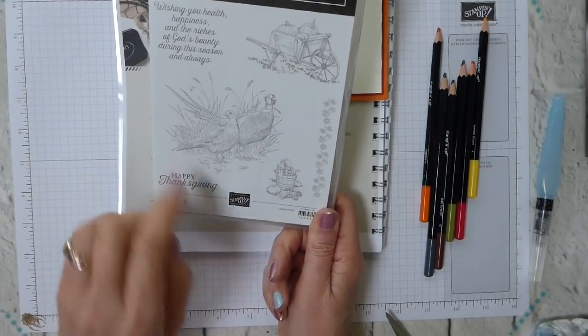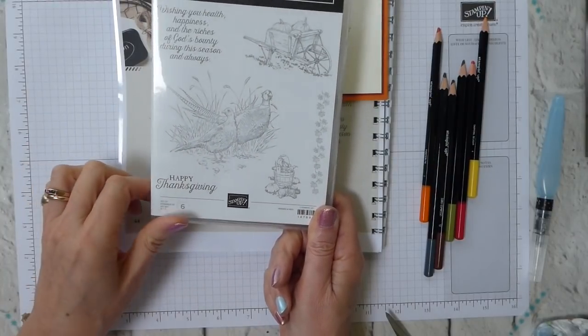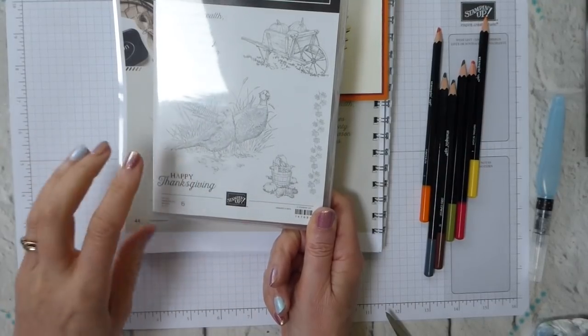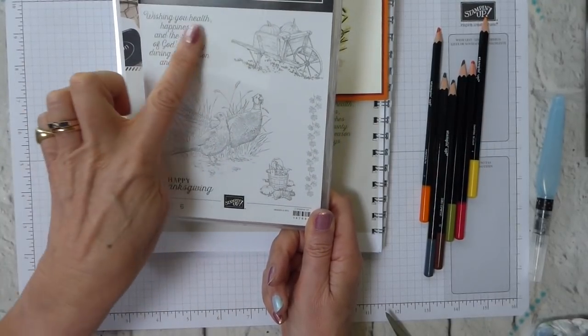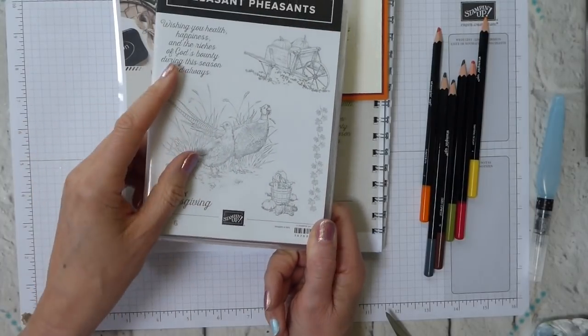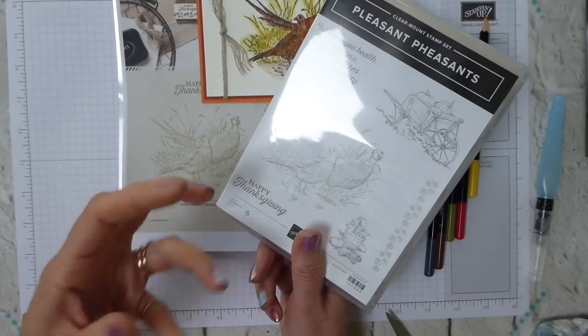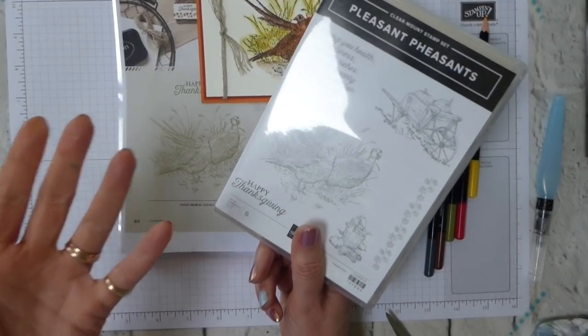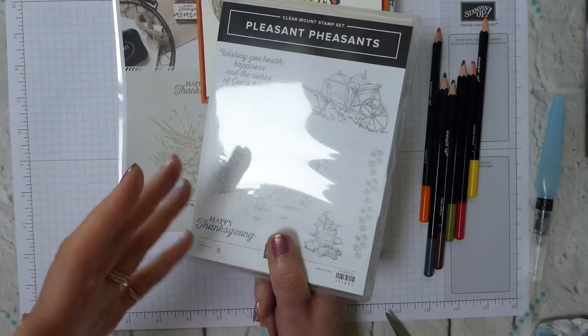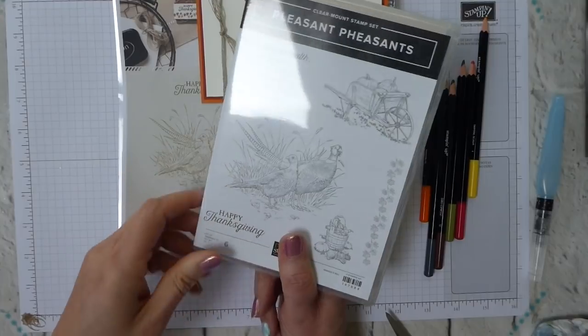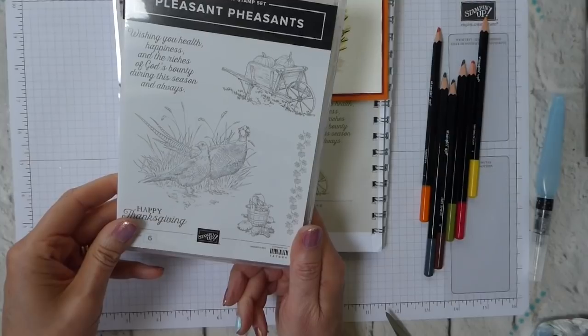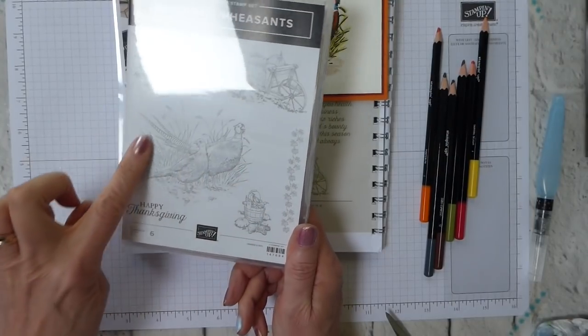So this I think is gorgeous. Yes, it's got Happy Thanksgiving, which in the UK we don't tend to celebrate, but I don't think that's an issue. Wishing you health, happiness, and the riches of God's bounty during this season and always great for Harvest Festival. So although we don't have Thanksgiving as such, we do have Harvest Festival coming up back end of September, beginning of October. It's a bit of a variable feast, depending on where you are in the country. But certainly for us, it's the first weekend of October, and this is perfect for that.